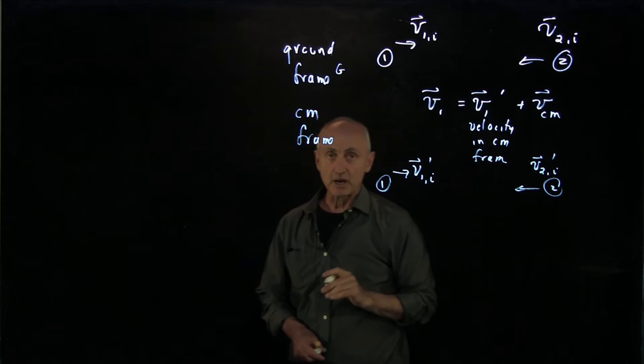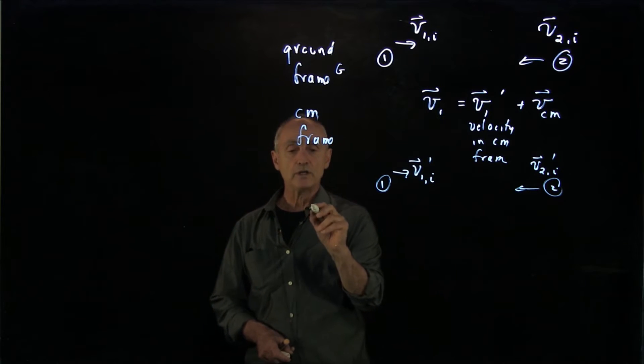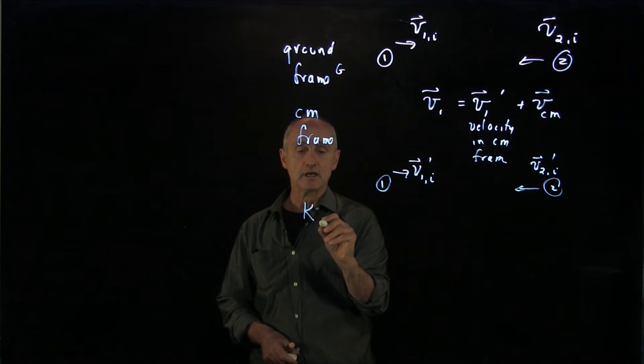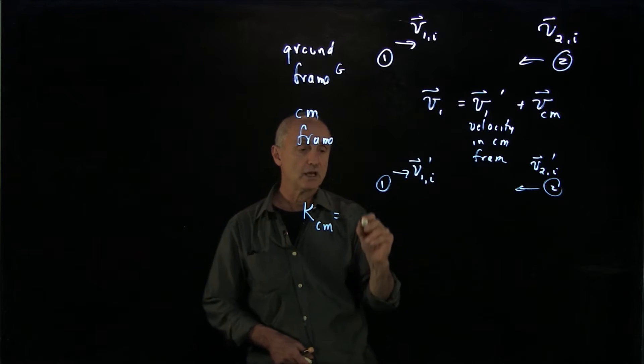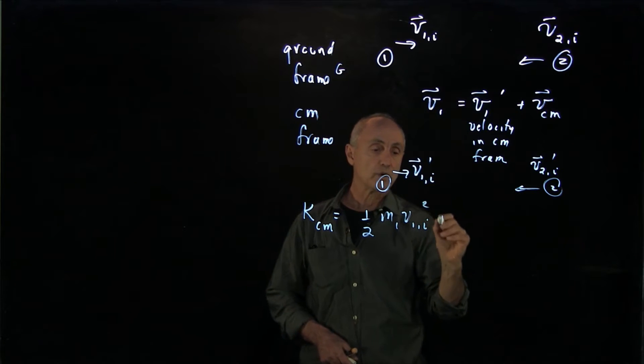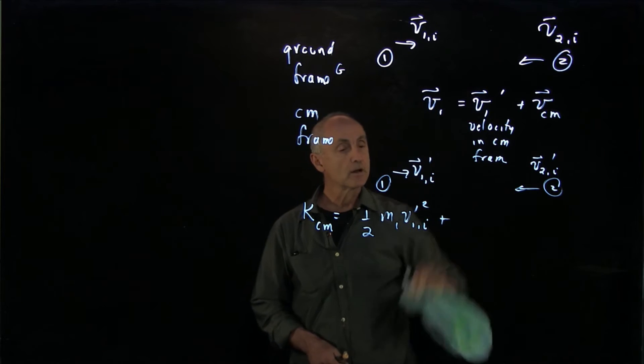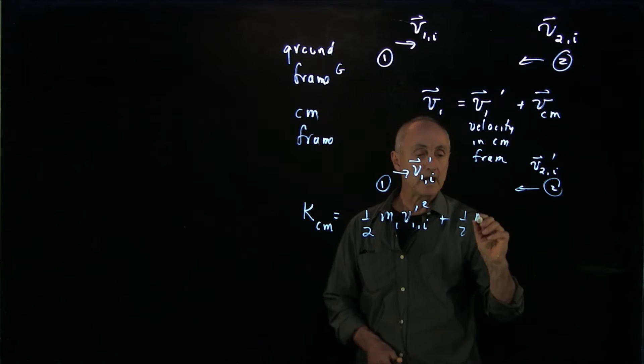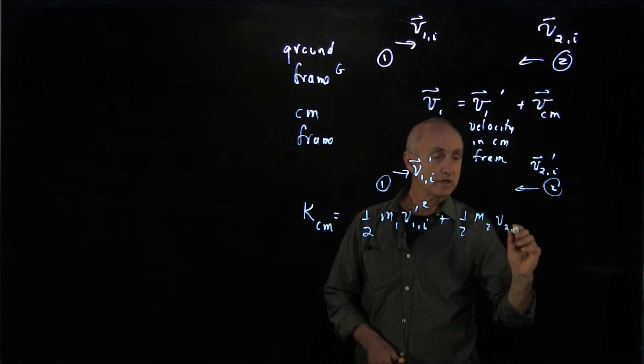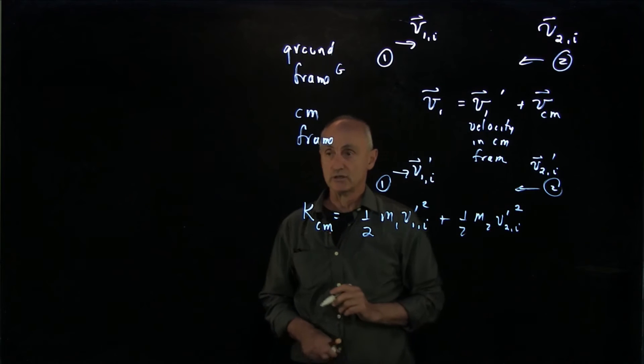Now let's compare kinetic energies in these different frames. We know that the kinetic energy in the center of mass frame is just 1 half m1 v1 initial squared prime, put the prime there, plus 1 half m2 v2 initial prime squared, kinetic energy in the center of mass frame.